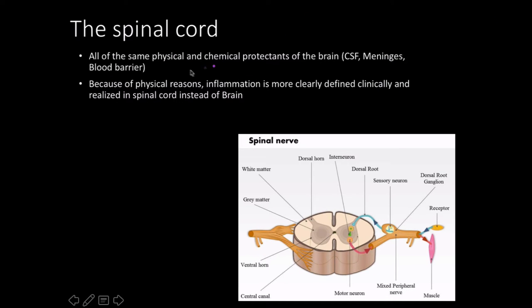All the same physical and chemical protectants found in the brain — cerebrospinal fluid, the meninges, the blood-brain barrier — all that stuff is still in the spinal cord. Your spinal cord is literally just an extension of your brain in terms of embryonic development.